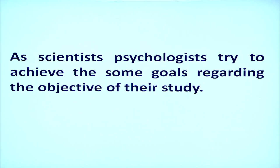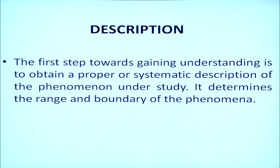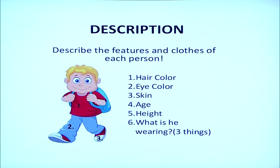There are various goals of psychological researchers. As scientists, psychologists try to achieve certain goals regarding their study. The first aim of a psychological study is to describe the phenomena. The first step towards gaining understanding is to obtain a proper, systematic description of the phenomena under study. It determines the range and boundary of the phenomena.